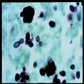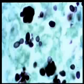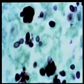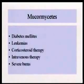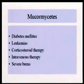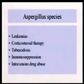Torulopsis is a small, slightly elliptical yeast — you can't really tell it from any of the other yeasts just by looking. The mucors — that's the second most important group. Candida, aspergillus, mucor — those are the top three in compromised patients.